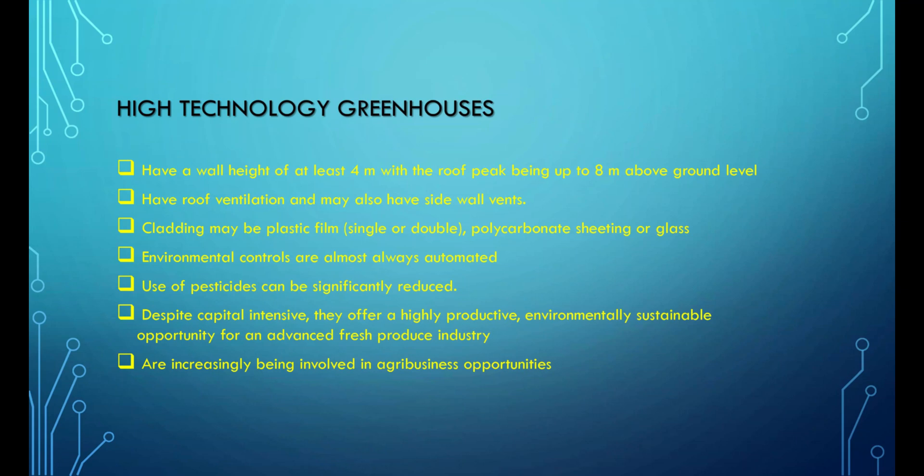High-technology greenhouses have a wall height of at least 4 meters with the roof peak being up to 8 meters above ground level, have roof ventilation and may also have side wall vents. Cladding may be plastic film (single or double), polycarbonate sheeting, or glass. Environmental controls are almost always automated. Use of pesticides can be significantly reduced. Despite being capital-intensive, they offer a highly productive, environmentally sustainable opportunity for an advanced fresh produce industry, and are increasingly being involved in agribusiness opportunities.